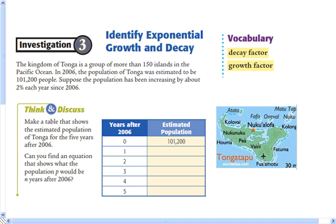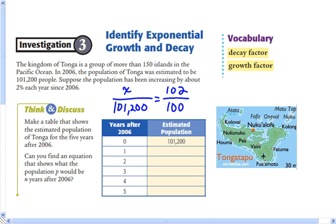The Kingdom of Tonga is a group of more than 150 islands in the Pacific Ocean. In 2006, the population was estimated to be 101,200 people, and it's increasing by about 2% each year. Two percent more means 102%, so we take 102 divided by 100, which gives us 1.02 — that's the growth factor we multiply by each year.